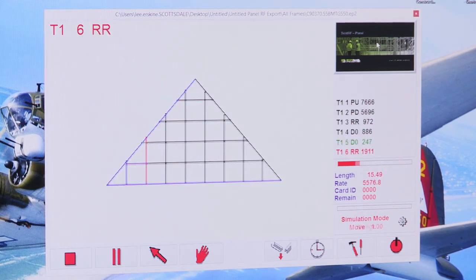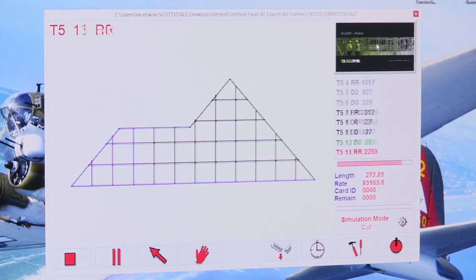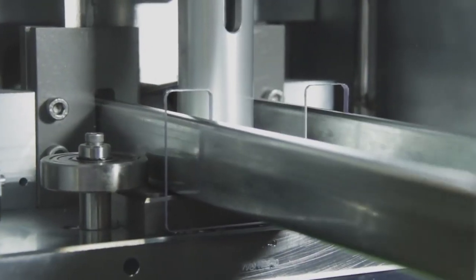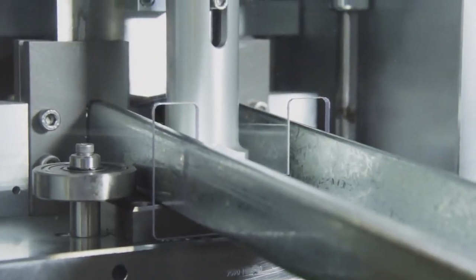Once exported, frames are checked once again, then the CNC-controlled roll former automatically produces all the elements cut to length, punched, notched and swaged.